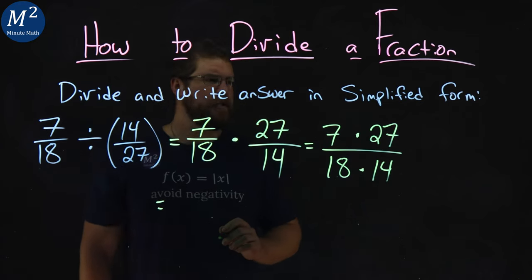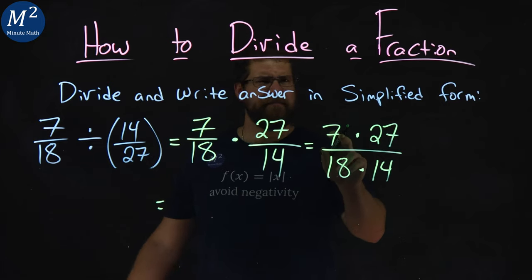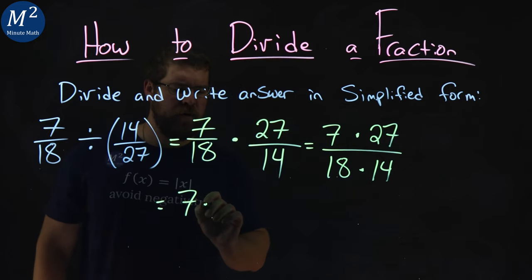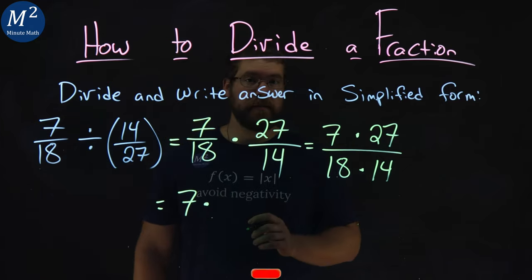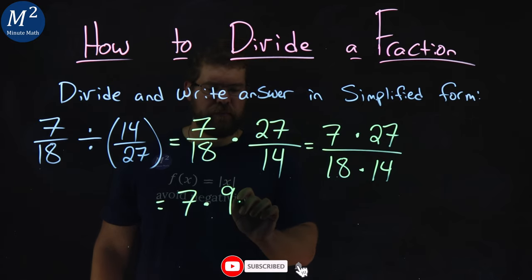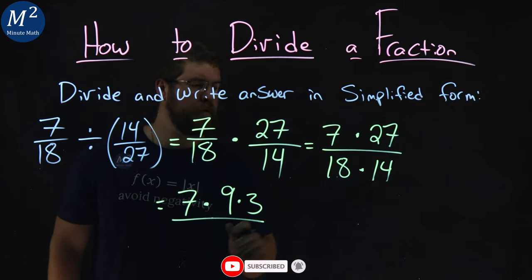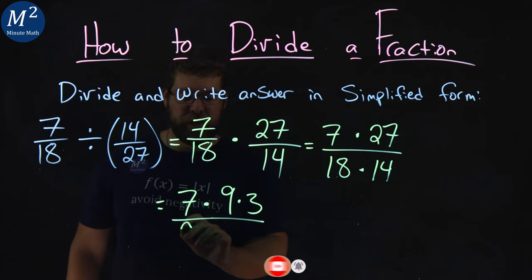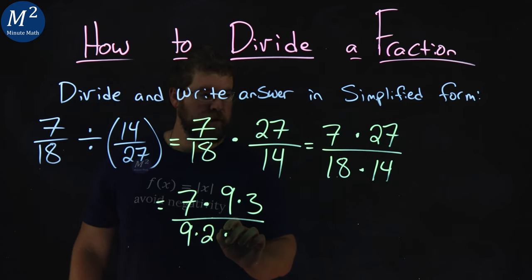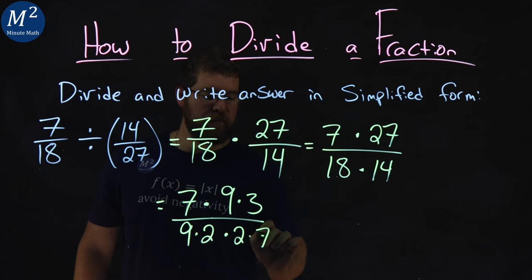Now, let's see if we can break this down. 7 doesn't break down anymore, but 27 does and is a 9 times a 3. Over denominator, 18 is a 9 times a 2 times a 14, which is a 2 times a 7.